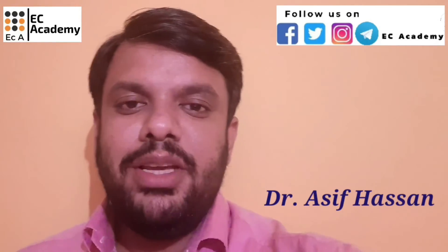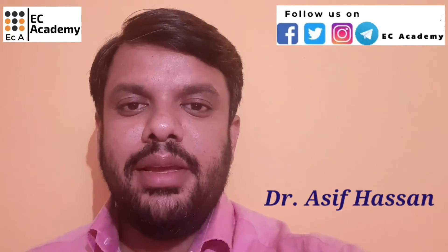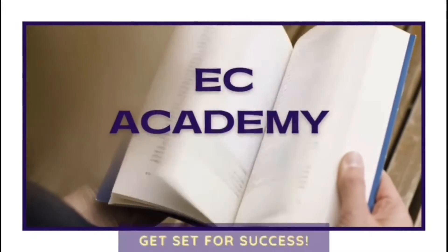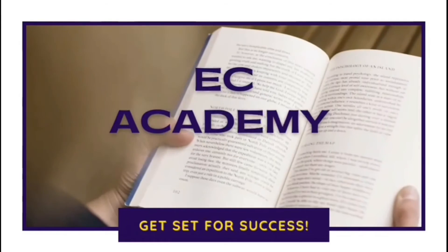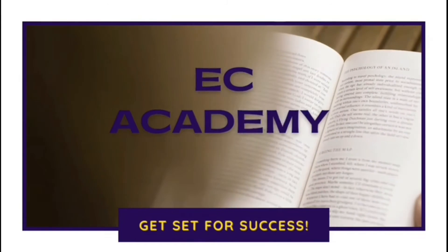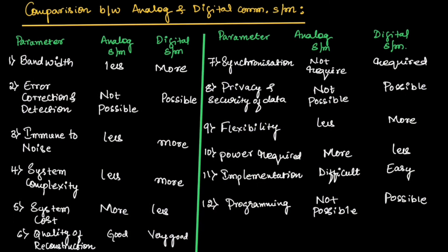Hello friends, welcome to EC Academy. In this lecture, let us understand the comparison between analog and digital communication systems. Let us take different parameters and compare the analog system with the digital system.